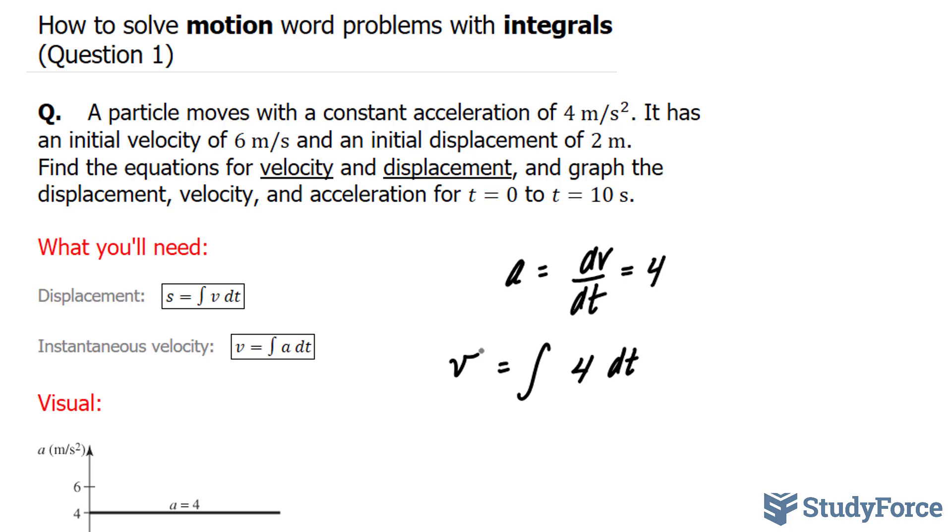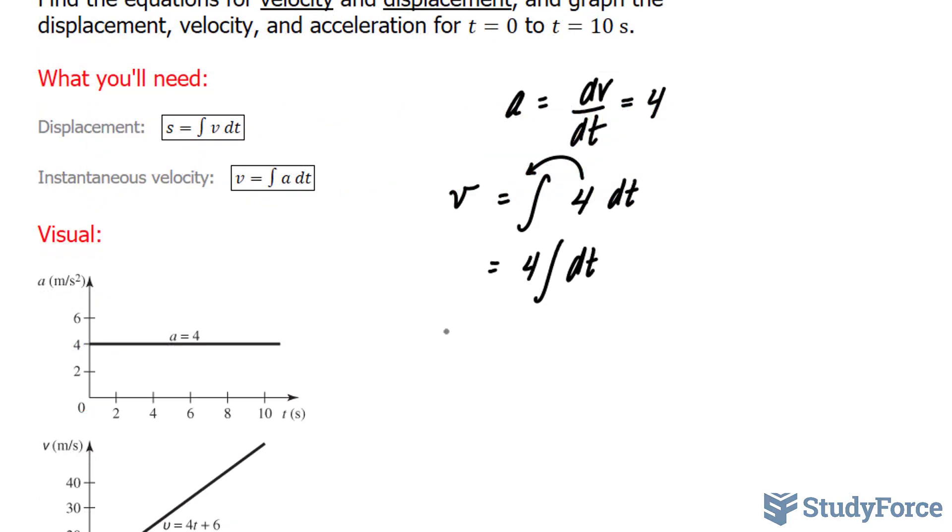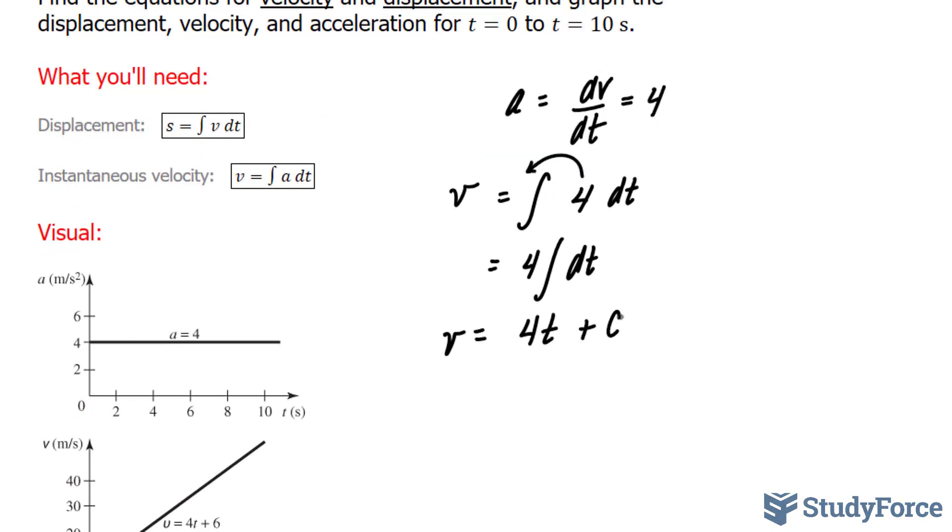Taking the integral of a constant is very easy. I can pull out this 4 outside of the integral. This leads me to 4 times the integral of dt, which is simply t. So v is equal to 4 times t plus our constant c, which we don't know.